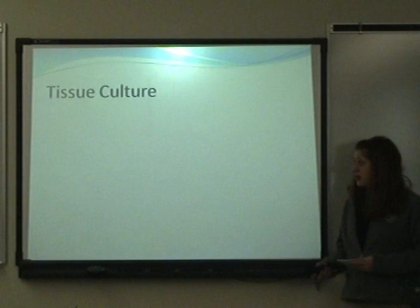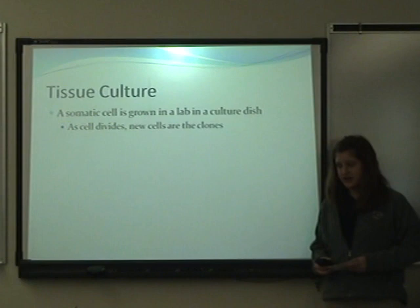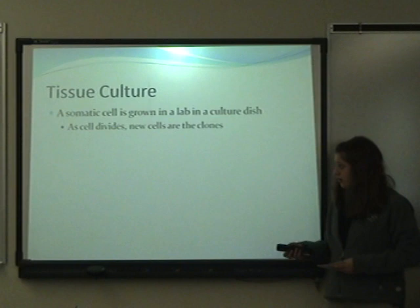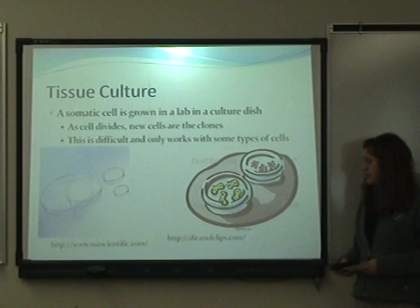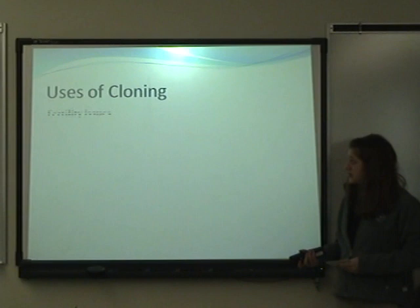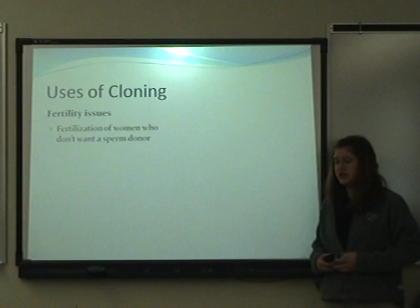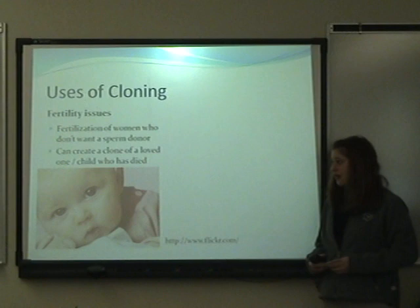Tissue culture is a somatic cell grown in a lab in a culture dish; as the cells divide, the new cells are clones. This is difficult and only works on certain types of cells. There are many different uses for cloning, the most common being fertility issues — for fertilization of women who don't want a sperm donor — and it can create a child of a loved one or a child who has died.